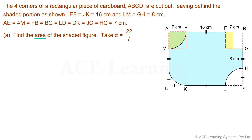Now we have an unshaded square of 7 cm at the corner of FBG. Next, construct a square at the corner of the quadrant HCJ. We have an unshaded part in this square — let's call it area R. Now construct a square at the corner of the quadrant LDK. We have a shaded part in this square — let's call it area S. Notice that area R is equal to area S.